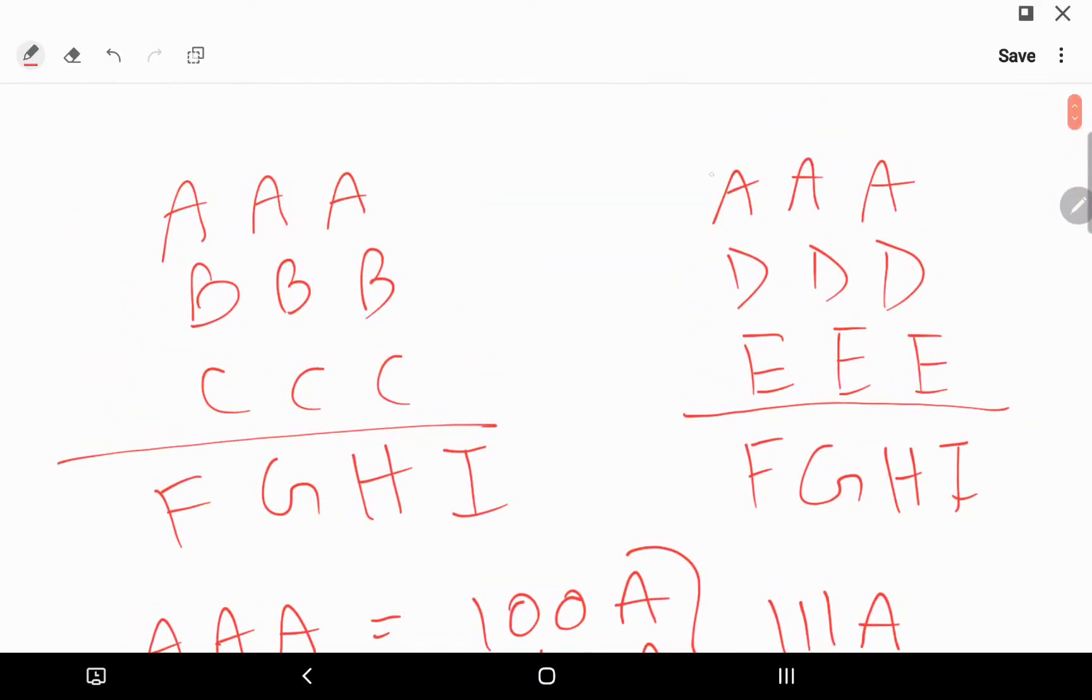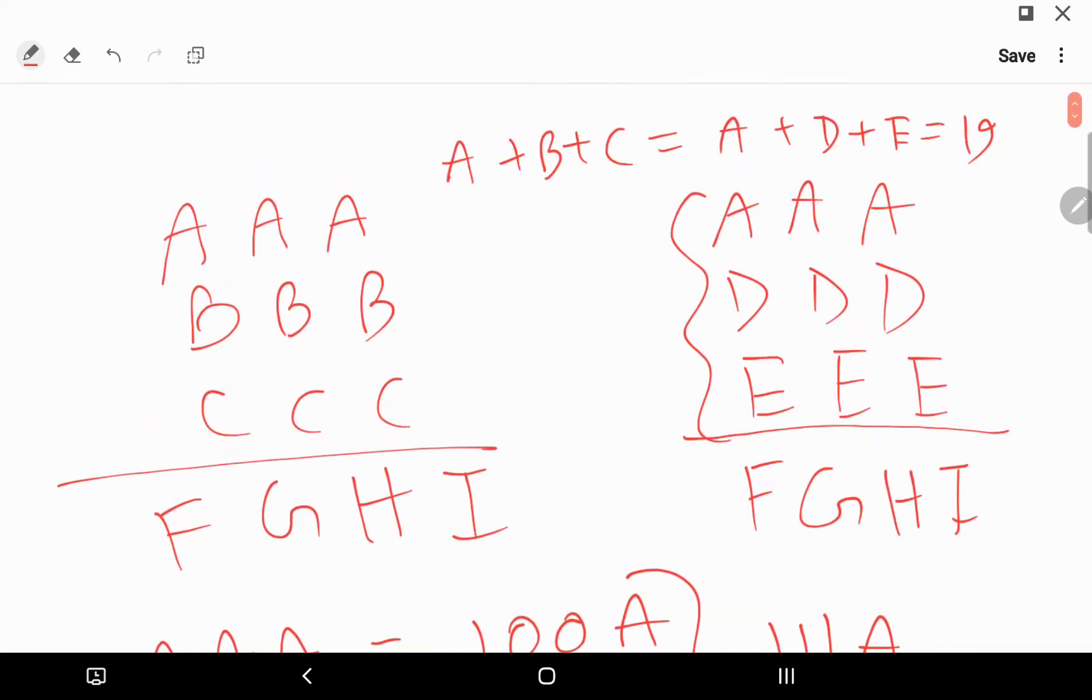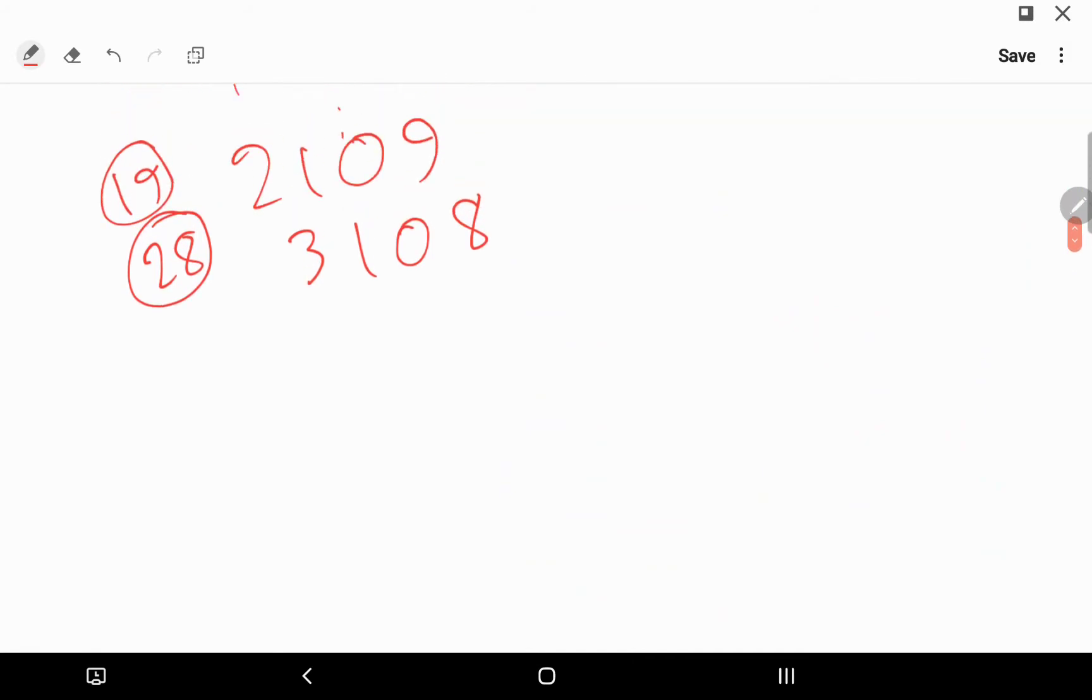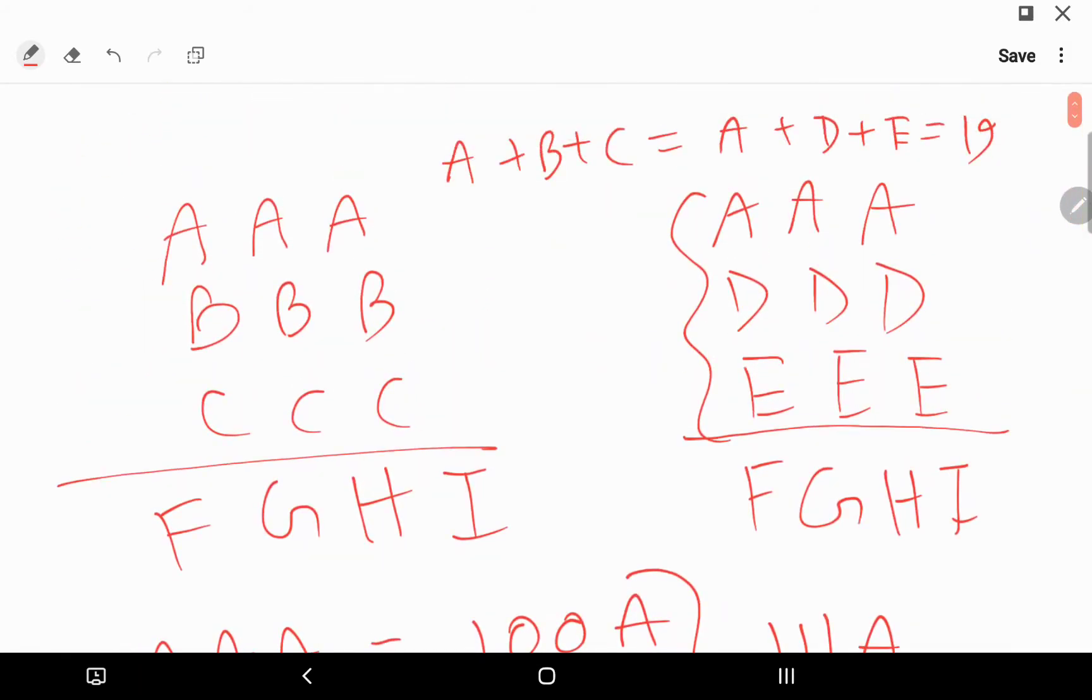So A plus B plus C must be 19. If A plus B plus C is 19, A plus D plus E is also 19. So I can write A plus B plus C equals A plus D plus E equals 19. So I need to solve for this, so I get B plus C equals D plus E.